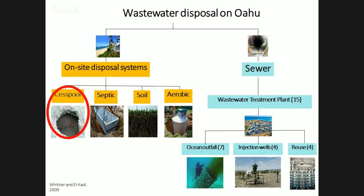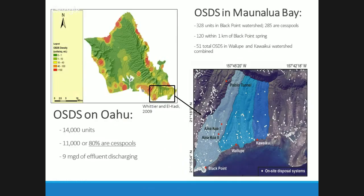OSDS on Oahu — you can get a good idea of density from the map, with red indicating the highest density, over 100 units per square mile. My talk focuses on Maunalua Bay, but across all of Oahu there are 14,000 on-site disposal system units. 11,000 of these are cesspools, nearly 80%, and cumulatively there are around 9 million gallons of effluent discharging per day from these units.